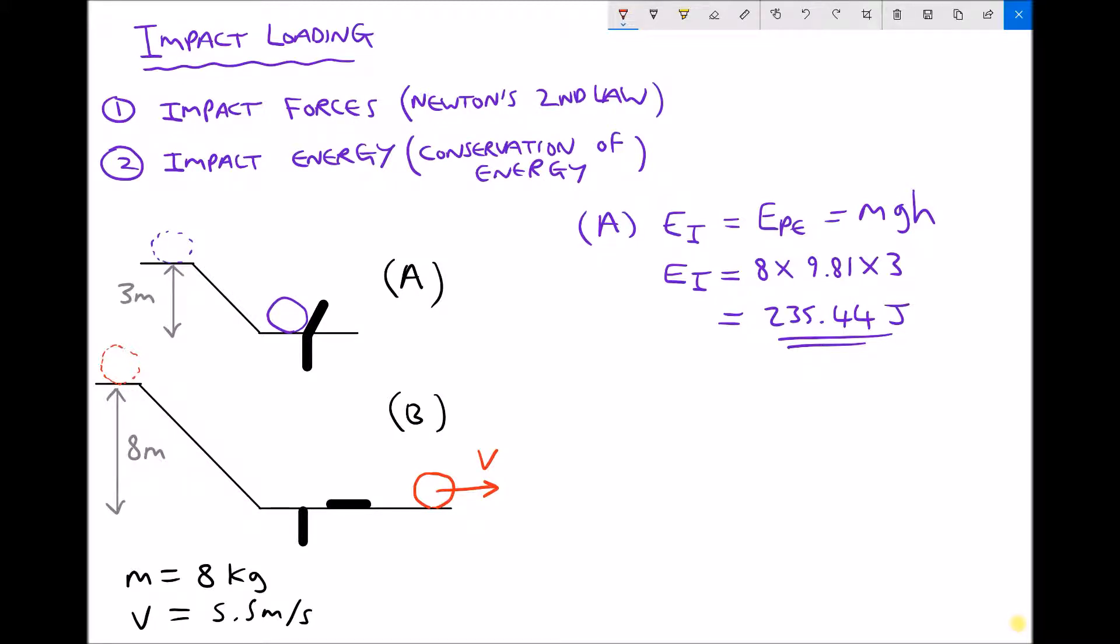Instead we can see that some of the energy has been absorbed causing the test piece to rupture, but the object still contains some energy. So what we can say in this case for scenario B is that the potential energy contained in the object at the top of the slope equals the impact energy, or the energy required to break the test piece, plus any remaining kinetic energy in the object.